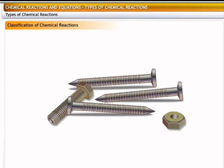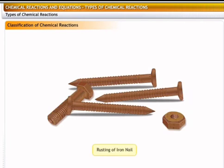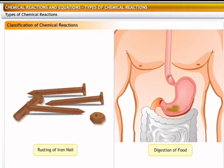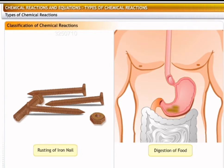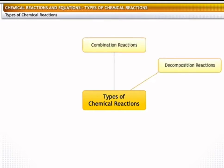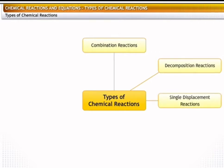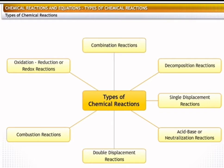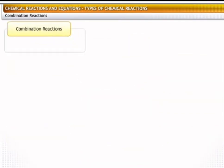Chemical reactions vary depending on the chemicals involved in the reaction as well as the environment of the reaction. For example, the rusting of an iron nail is an oxidation reaction. On the other hand, the digestion of food in our body is a decomposition reaction, where the complex food substances are broken down into simpler substances like glucose that give energy. Chemical reactions can be classified into the following types: combination reactions, decomposition reactions, single displacement reactions, acid-base or neutralization reactions, double displacement reactions, combustion reactions, and oxidation-reduction or redox reactions.